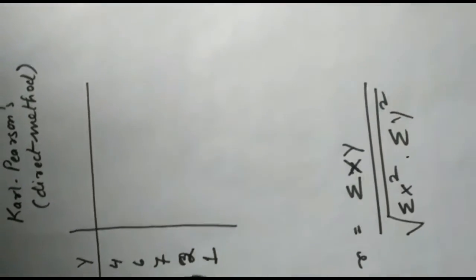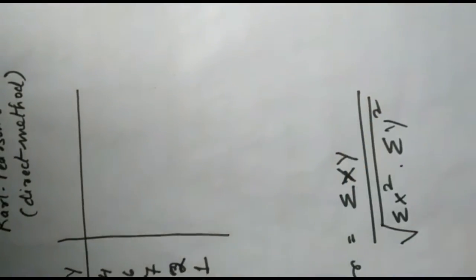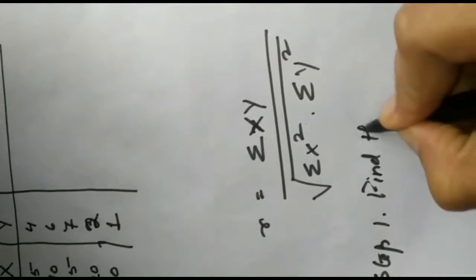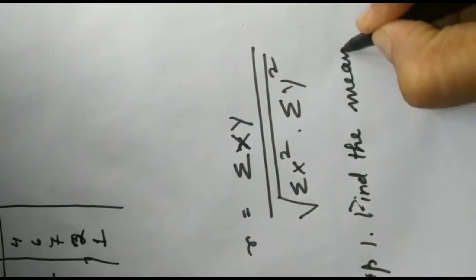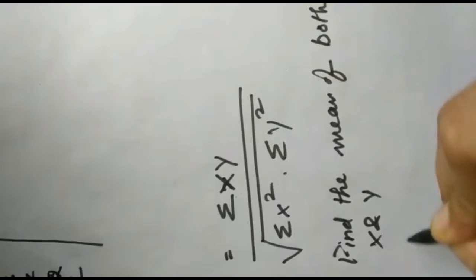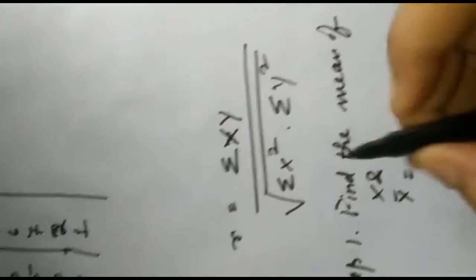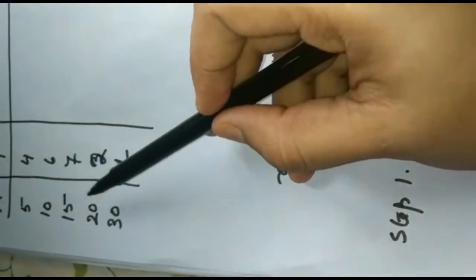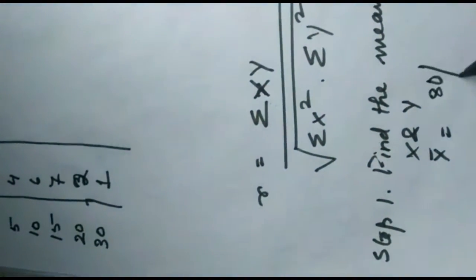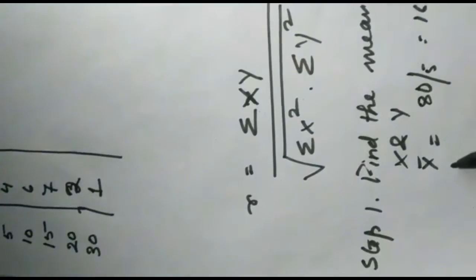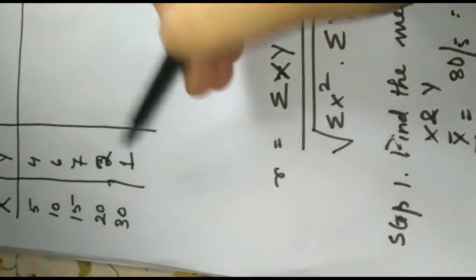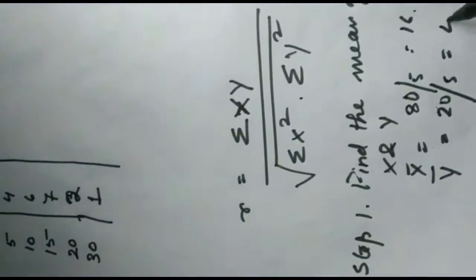Step one: find the mean of both x and y. So x mean will be 5 plus 10 plus 15 plus 20 plus 30 equals 80, divided by number of observations is 5, equals 16. Y bar equals 4 plus 6 plus 7 plus 2 plus 1 equals 20, divided by 5 equals 4.